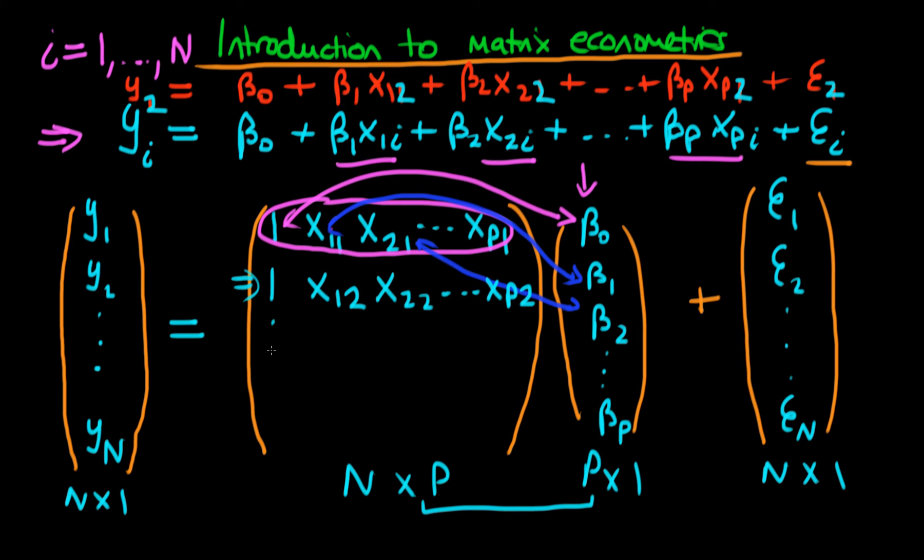In general, we need to fill in this matrix for all n individuals. The last row is for the nth individual: the first component is still 1 because we have this constant, then x1n, x2n, all the way through to xpn being the last term in the bottom right of the matrix.